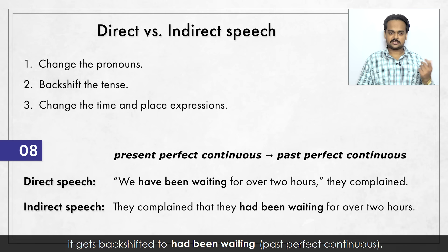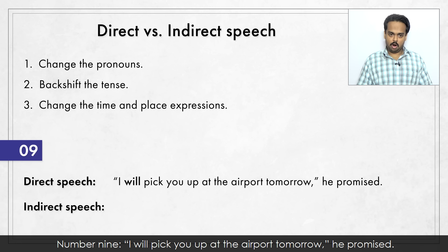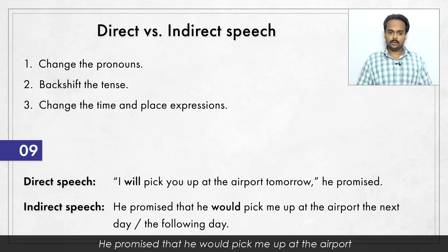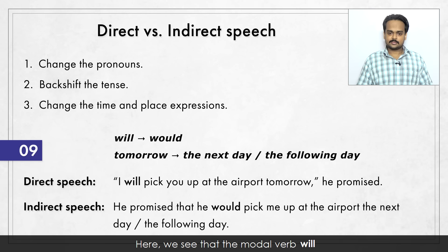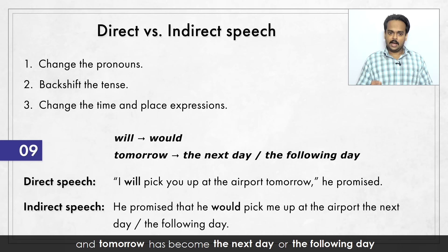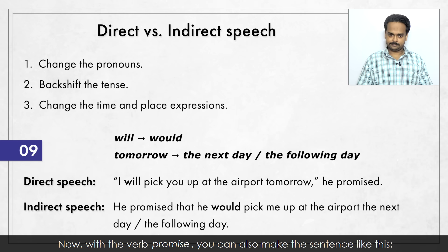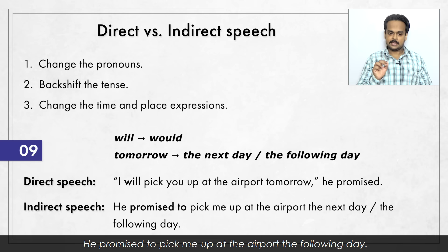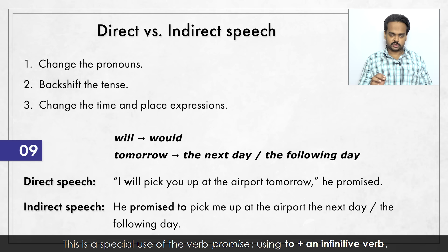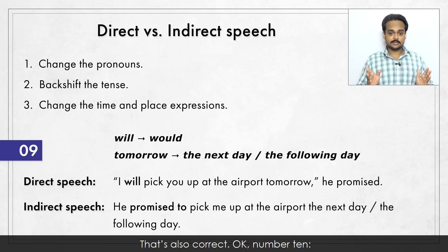Number nine: "I will pick you up at the airport tomorrow," he promised. He promised that he would pick me up at the airport the next or the following day. The modal verb "will" has been changed to its past form "would". And "tomorrow" has become "the next day" or "the following day". Now with the verb "promise", you can also make the sentence like this: he promised to pick me up at the airport the following day. This is a special use of the verb "promise", using "to" plus an infinitive verb – that's also correct.